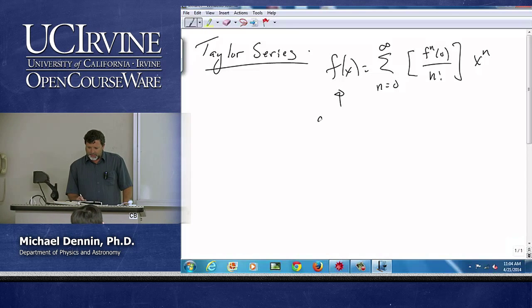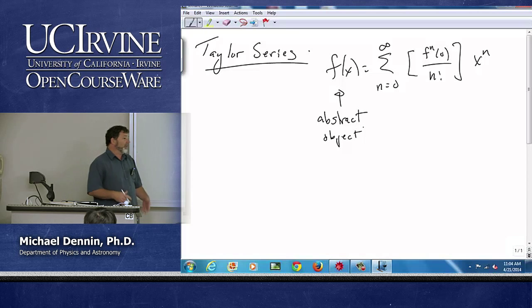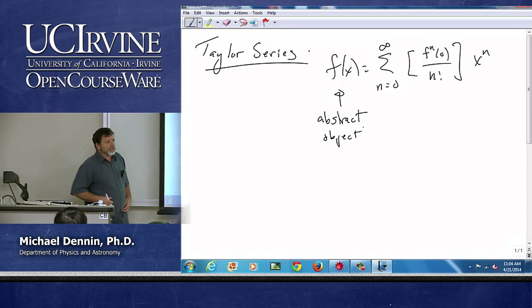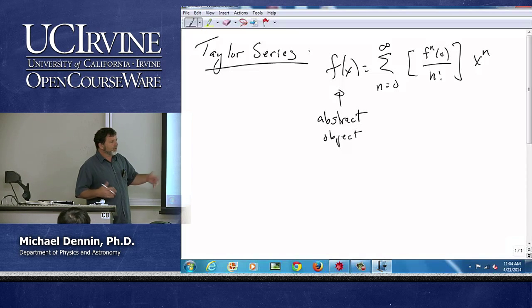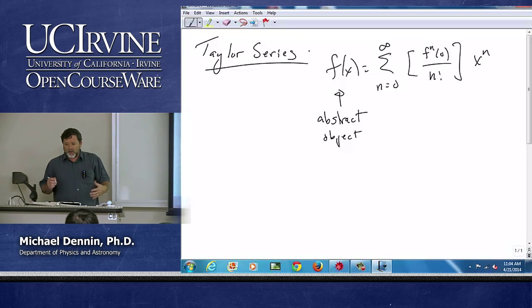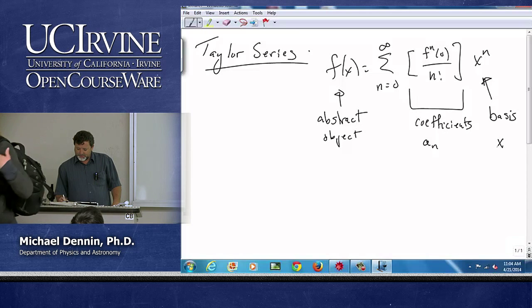We have an interesting structure here. I have my function f(x), which I'm going to call my abstract object. The function might be defined, I might call it sine of x, I might call it Legendre polynomial, I might call it e to the x times 1 plus x squared, whatever function of x I want. Now, I'm writing it in terms of coefficients that I would call a sub n times a basis, where my basis is x to the n.